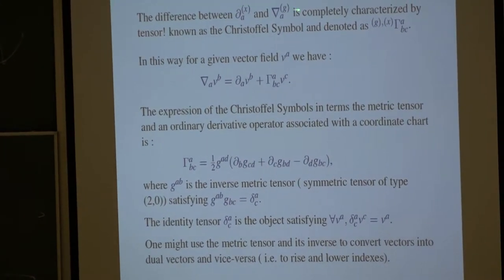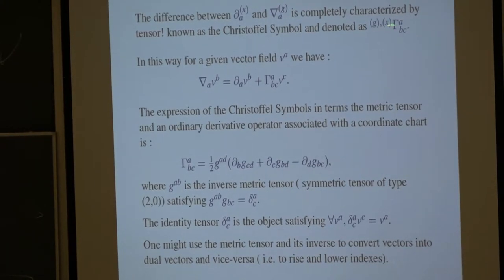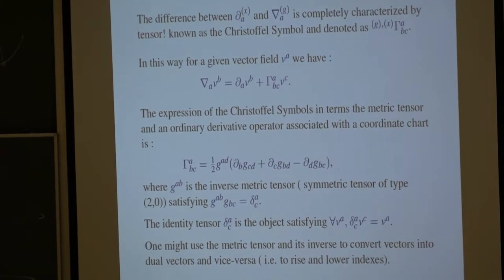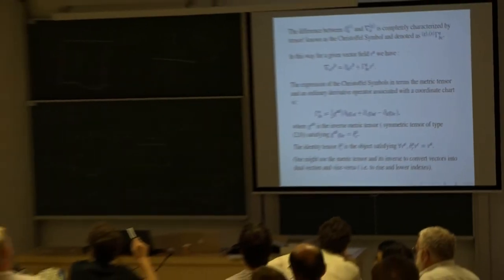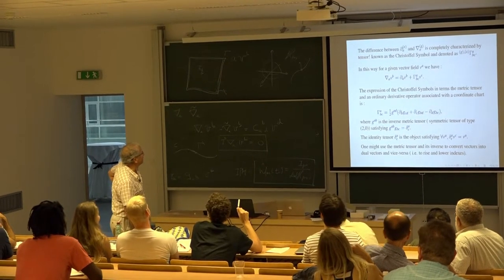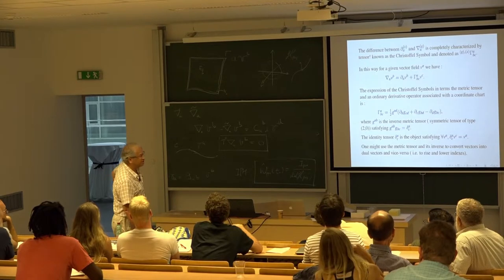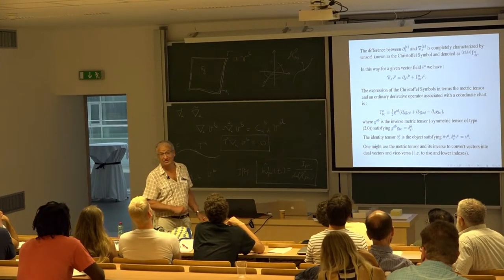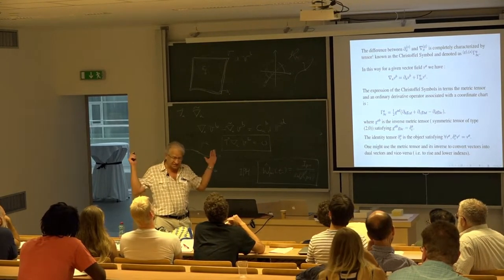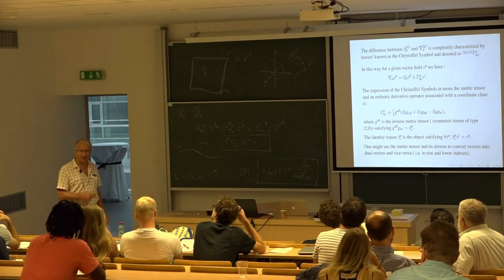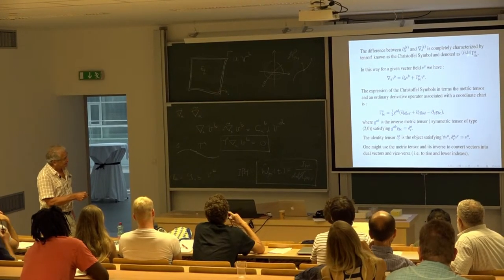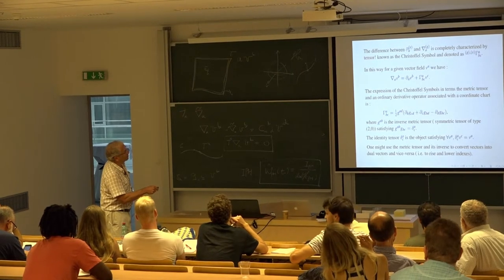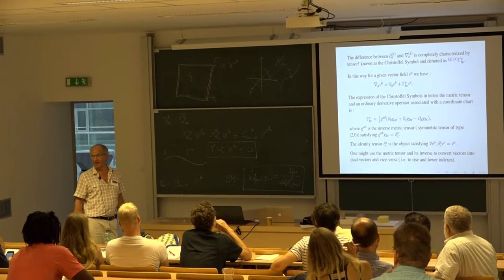It's very important to note that this object is the particular version relevant to connecting the derivative operator associated with the metric to any ordinary derivative operators. With that, the two derivative operators being connected, this object is called the Christoffel symbol. This Christoffel symbol is a tensor intimately associated with the metric of your spacetime and the particular ordinary derivative operators you have. The red notation here is to note that this object is a tensor — sometimes in other presentations people say it's not a tensor, but here it clearly is.